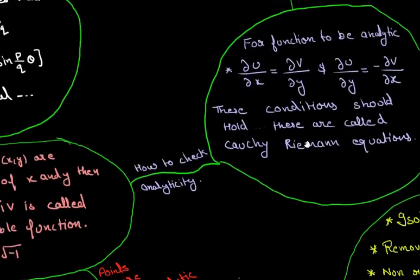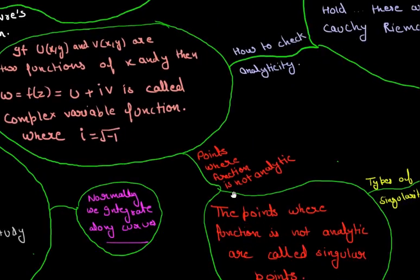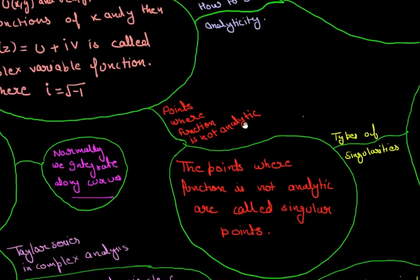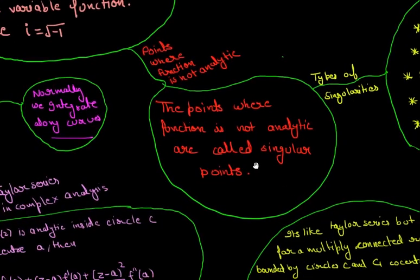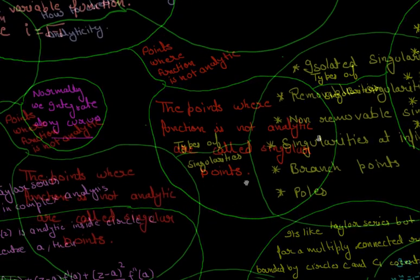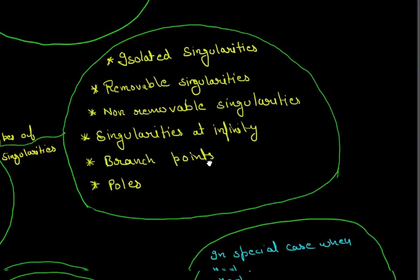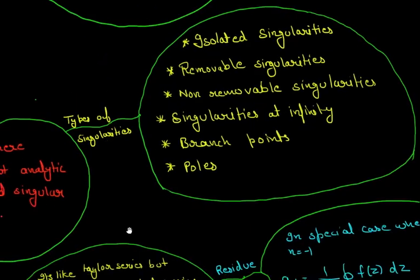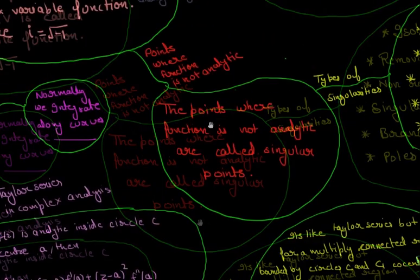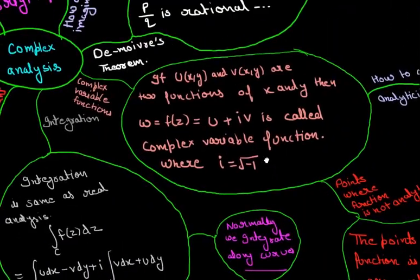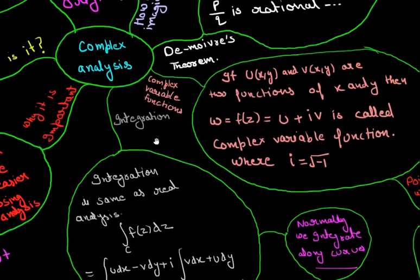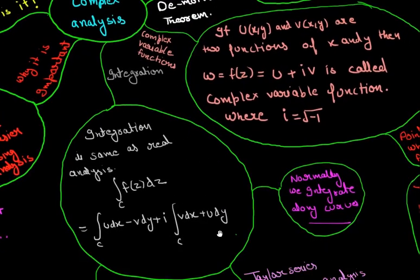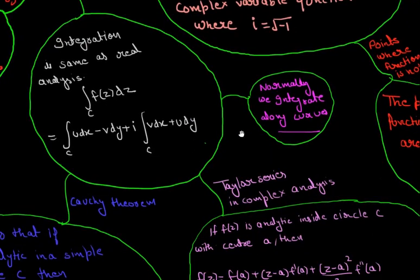Let's go back. Here points where the function is not analytic is called a singular point. In here these are the types of singularities. Now let's go back and it goes to the center. We are now at the integration part and this shows how we integrate things. Normally in complex analysis we integrate along curves.